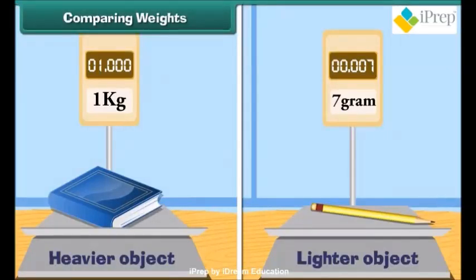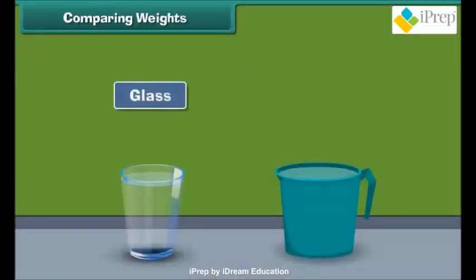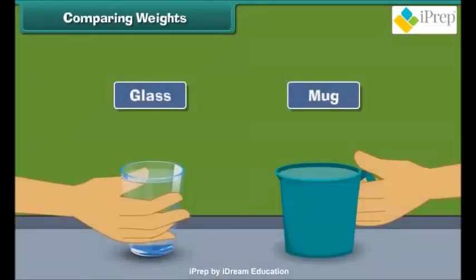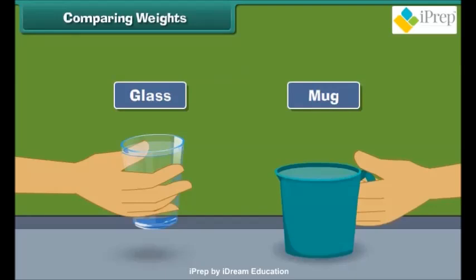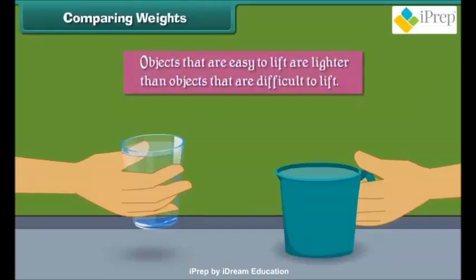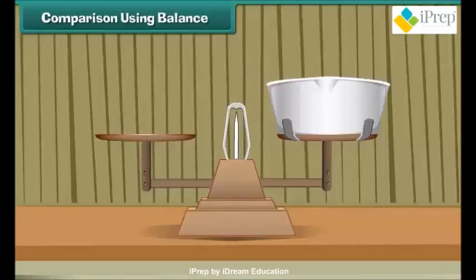A heavier object has more weight than a lighter object. Let us understand it with an example. Fill a glass with water and fill a mug with water. Try to lift both. Which is easier to lift? Quite obviously, the glass filled with water — it is lighter than the mug filled with water. Therefore, objects that are easy to lift are lighter than objects that are difficult to lift.